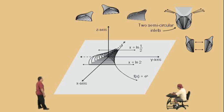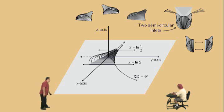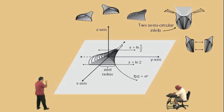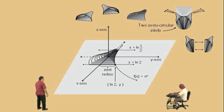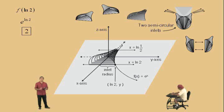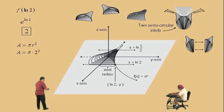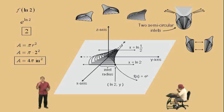Our first question is to find the area of the inlet, or the combined area from the two semicircular inlets. Now look at the graph. The inlet radius can be found by looking at the point of intersection of the line x equals natural log of 2 and f of x equals e to the x. That y-coordinate represents the radius of one of the semicircular inlets. We find y by substituting x equals natural log of 2: e to the natural log of 2 equals 2. The combined area of our two semicircular inlets gives us the area of a circle. Substituting radius equals 2, the combined area is 4π inches squared.